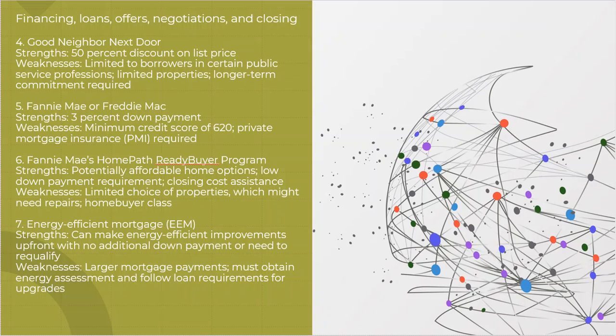Fannie Mae and Freddie Mac has some special deals, 3% down. They've got a credit score qualification, 620. And there's PMI. So that's the downside to Freddie Mac and Fannie Mae.